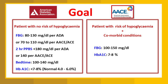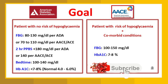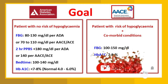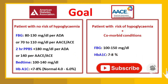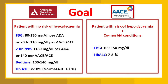HbA1c should be less than 7–8%. For patients with comorbid conditions and risk of hypoglycemia, the FPG target can be 100–150 mg/dL and HbA1c can be 7–8%. So there is a slightly more extended target level for patients with risk of hypoglycemia and comorbid conditions.